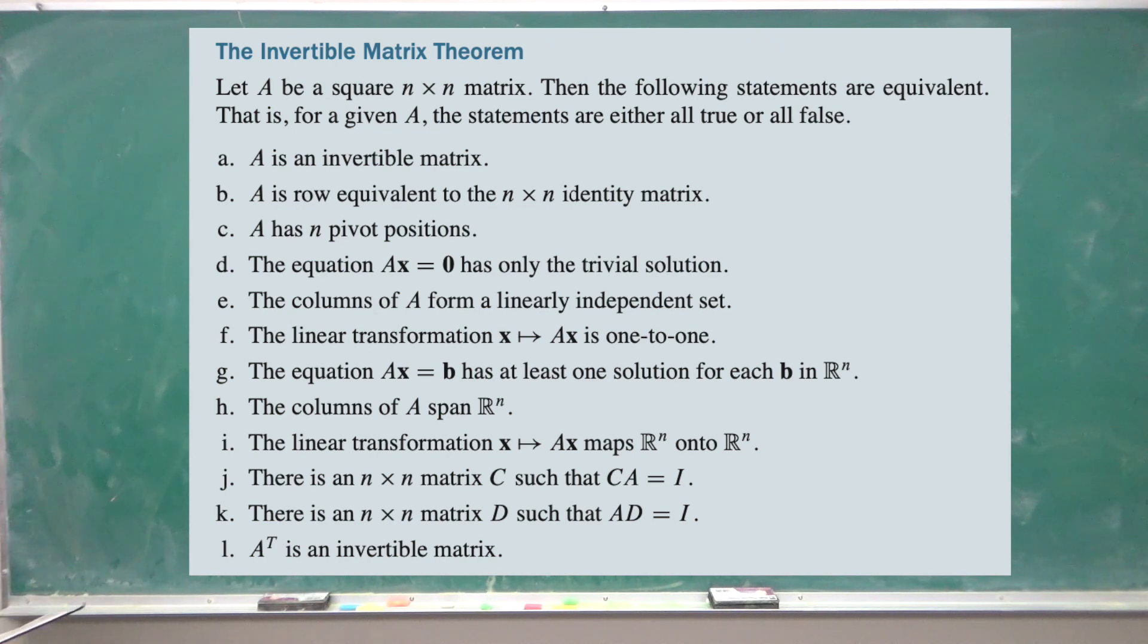But then you can pick any other statement. Let's say statement C, A has n pivot positions. Then that implies that A is an invertible matrix.